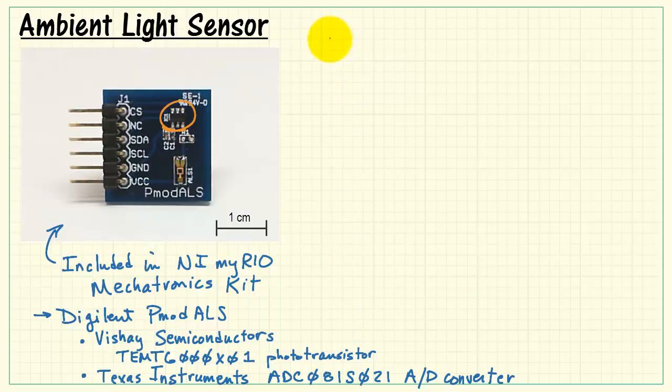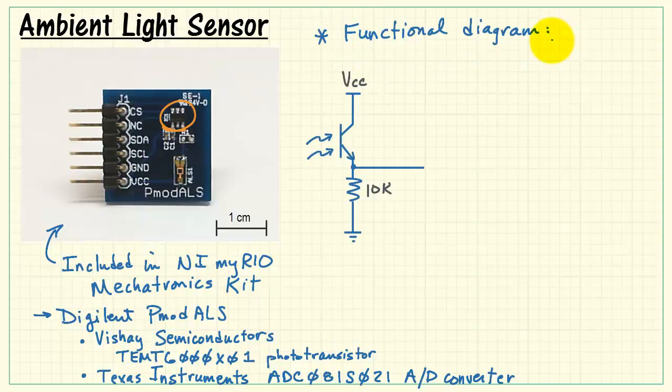Let's first take a look at the functional diagram for the PMOD ALS board. The Vishay Semiconductor's phototransistor is located right here. It's wired between the supply voltage and ground. This voltage varies according to the incident light on the phototransistor.